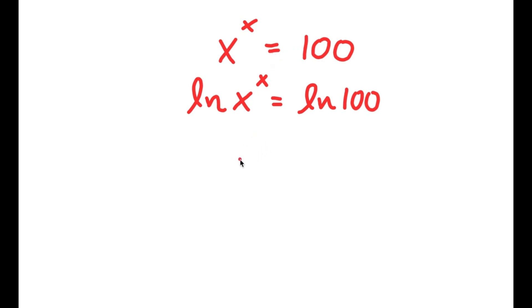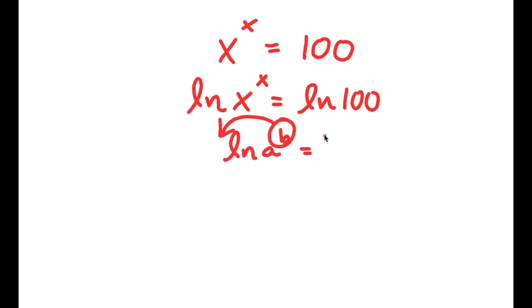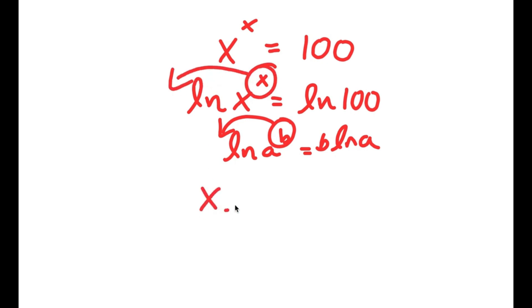Now, if I have something in the form ln a to the power of b, I can move b to the front. So this is going to equal b times ln a. So for ln x to the power of x, I can move x to the front, and I get x times ln x is equal to ln 100.